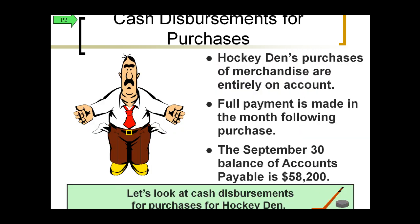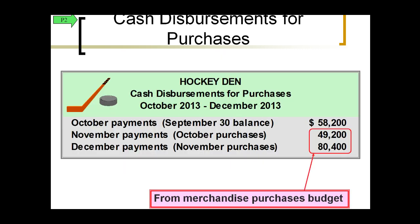The same is true for disbursements. We want to make certain we have sufficient inventory to meet customer demands, so we estimate what we're going to spend on purchases based on estimated inventory levels. What we think we're going to spend is not what we'll actually spend — it's a good guess based on assumptions about customers, cash receipts coming in, and expected expenditures going out. We want a good idea of what we'll spend on purchases for a period of time.